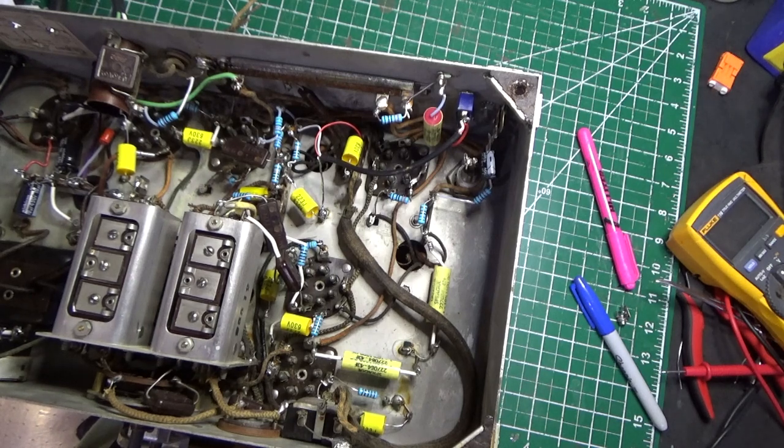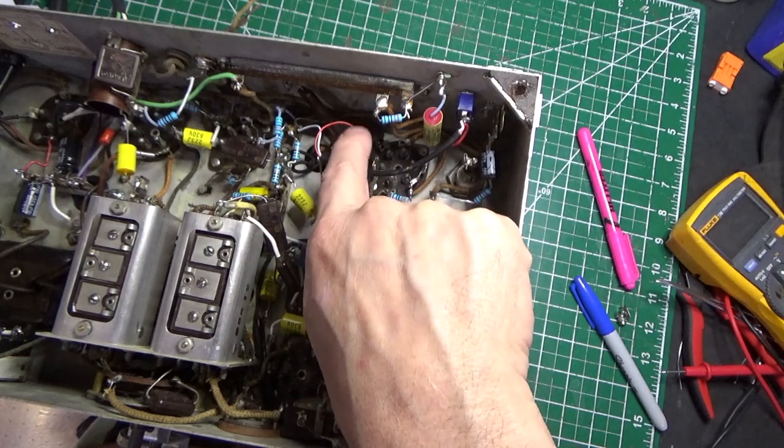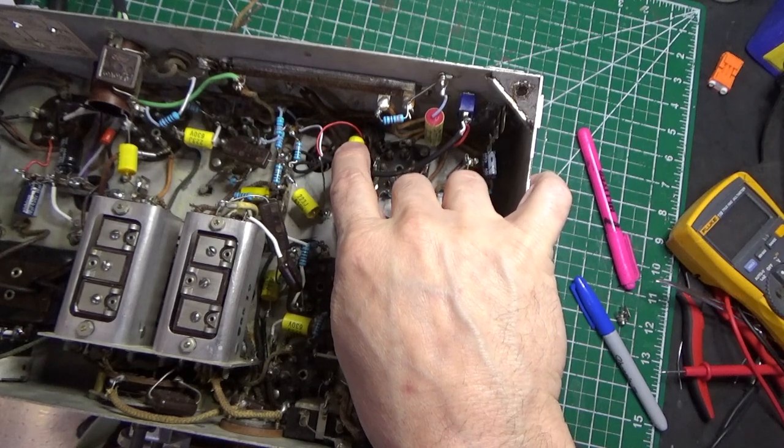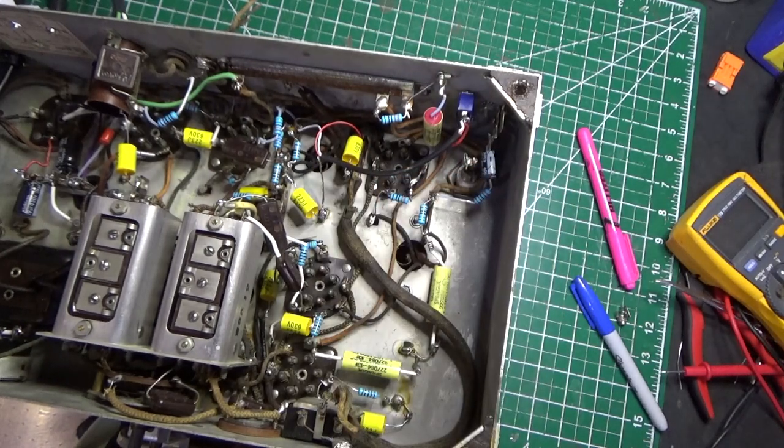And it turns out that that 0.02 cap that I showed you coming off the volume control is right here. So all I had to do is lift up one end of that capacitor and connect it to the switch just like I showed you.